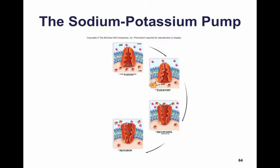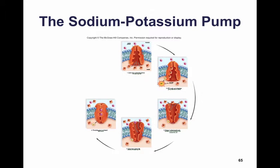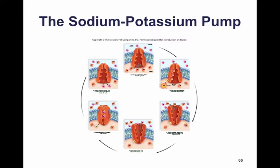On the other side of the cell, potassium ions bind to two potassium binding sites. When they bind, the shape of the molecule changes slightly, expelling the phosphate molecule. When the phosphate molecule is expelled, the shape changes once again back to the original shape, expelling the potassium ions inside the cell. So this pump transports sodium ions out and potassium ions in, against a concentration gradient, using the energy from ATP.